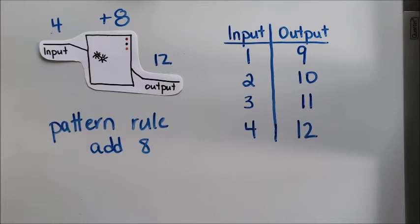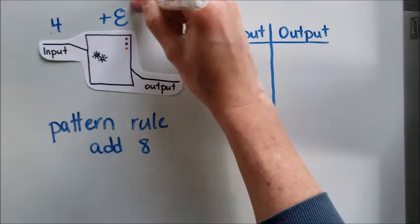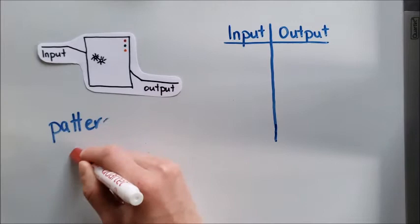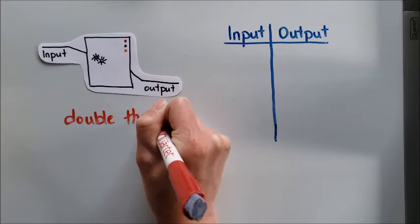Now there are lots of different ways that my input-output machines can work. So we're going to look at another example of a different type of machine. The next input-output machine that we're going to talk about, its pattern rule is that it's going to double then add six.